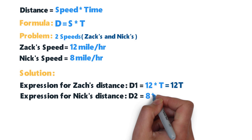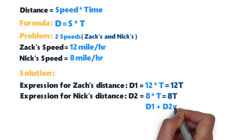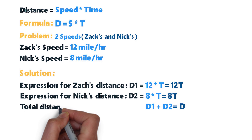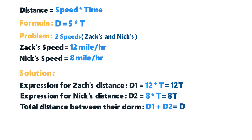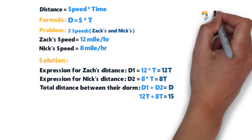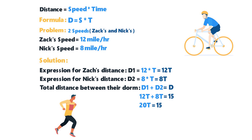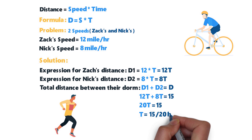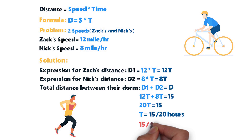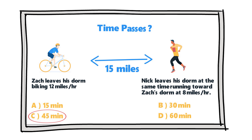Because Zack and Nick meet somewhere in between their dorms, we can say d1 + d2 = d, the total distance. Substituting: 12t + 8t = 15, so 20t = 15, which means t = 15/20 hours — that is three-fourths of an hour, or 45 minutes. So the correct choice here is choice C, 45 minutes.